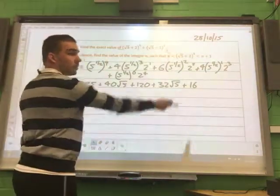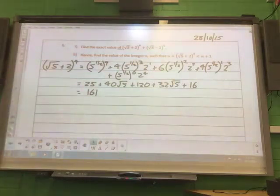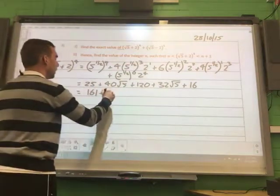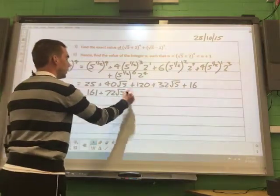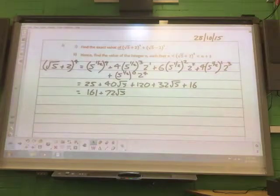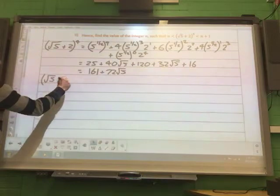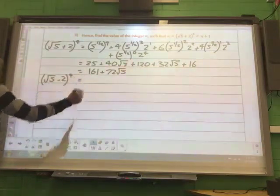Okay, so we've got 25 plus 120 plus 16. So sum of that 161, plus 72 root 5. So adding your like terms using your surd laws. Alright, root 5 take away 2 to the power of 4.